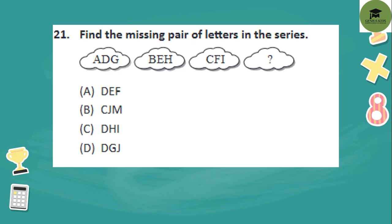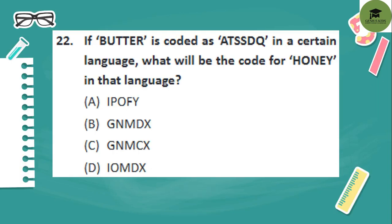Find the missing part of the letter in this series. If you see A, B, C — this is a continuing letter sequence, so here should be D. Then D, E, F, then G. And G, H, I, J. So the missing pair of letters is D, G, J. That is Option D, so Option D is your correct answer.